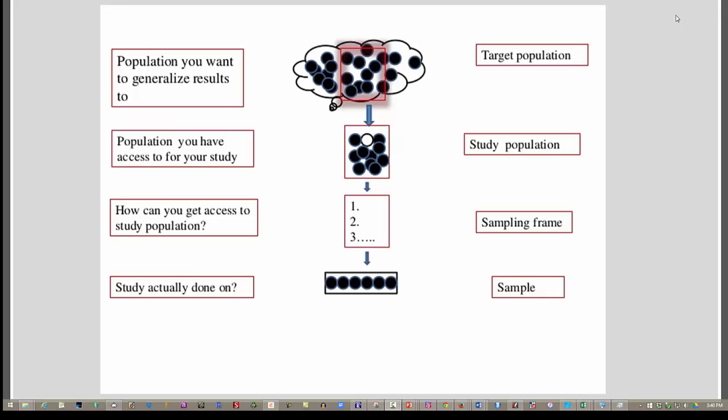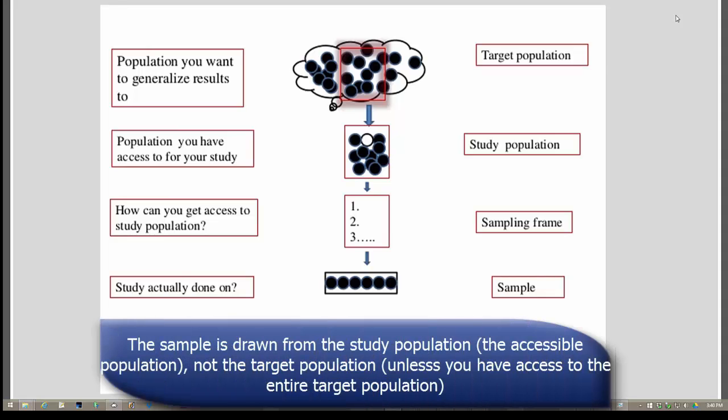But sometimes you don't have access to that whole population. For example, if we were trying to contact everybody by telephone using home phone numbers, we wouldn't include anybody that has cell phones, or people like me that rely solely on a cell phone. The study population in this case would be only people with home phones.